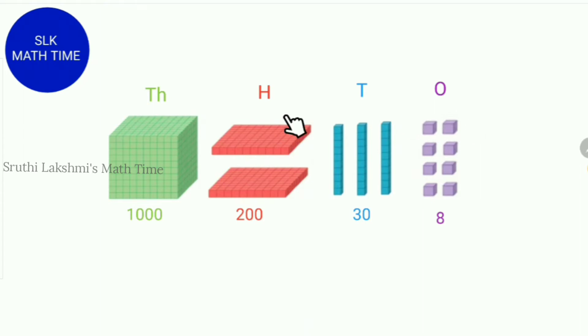So to add these base 10 blocks, you ignore the zeros and just write the numbers. So since there is no zero in 8, we write 8 as it is. Next, there is a zero in 30, so we ignore the zero and only write the 3. Next, we ignore the two zeros in 200 and only write the 2. So as you see, these base 10 blocks add up to 1,238.